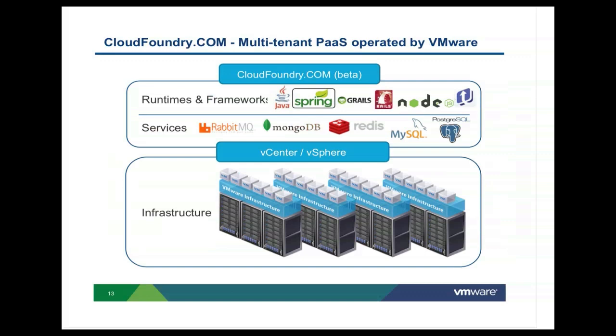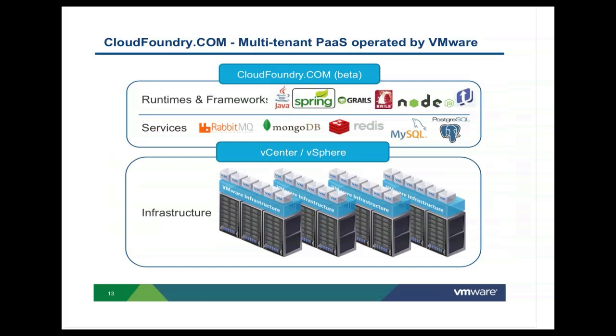In the next two or three minutes, I'd like to go over the two services you will see in the demo: cloudfoundry.com and Micro Cloud. cloudfoundry.com is a multi-tenant PaaS operated by VMware — a public cloud service running frameworks Java, Spring, Rails, Node.js, and Scala, with services Rabbit, Mongo, Redis, MySQL, and Postgres, running on vCenter vSphere infrastructure. When you go to cloudfoundry.com, you just get an account and start deploying your app. The service is currently in beta, so it's all free with a beta quota.